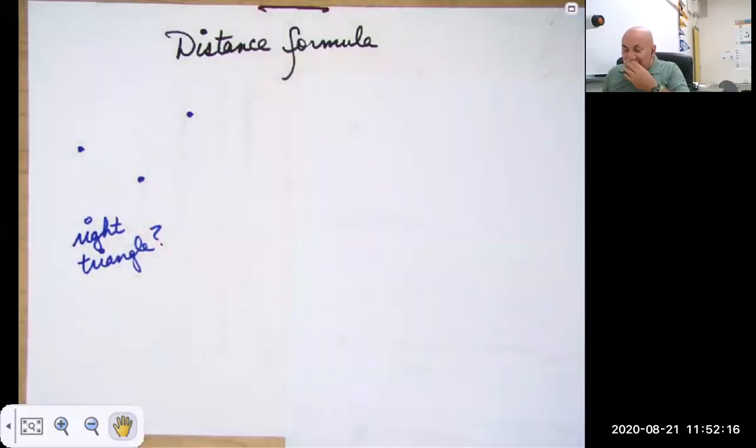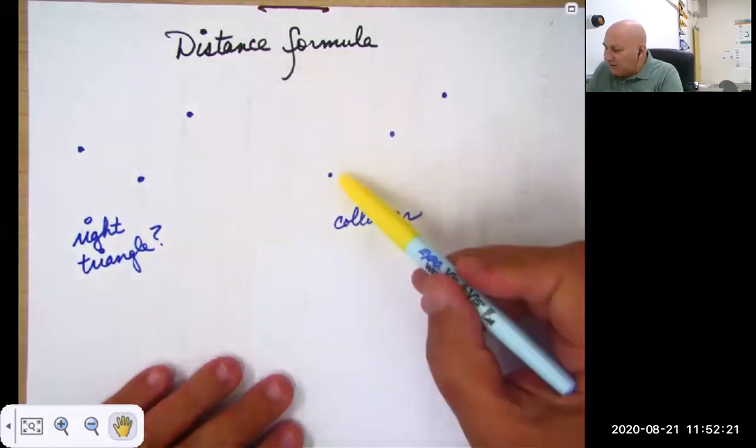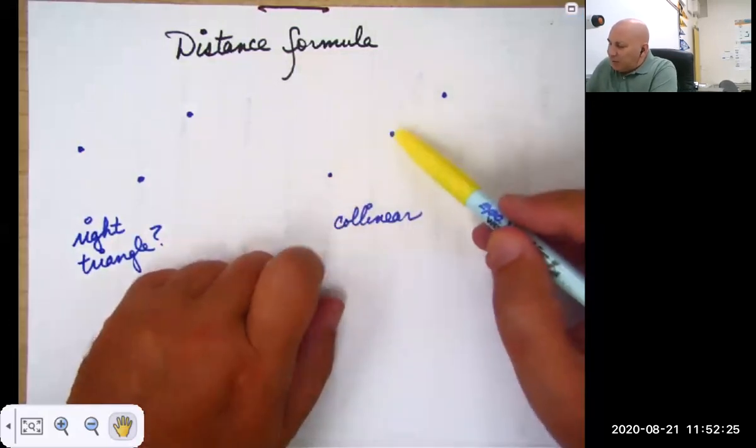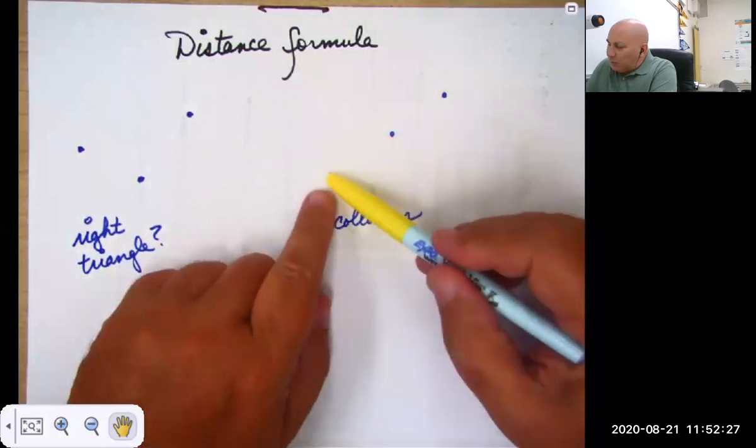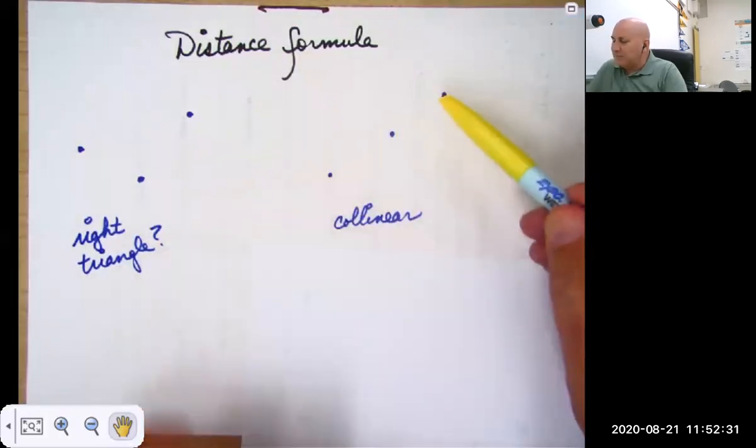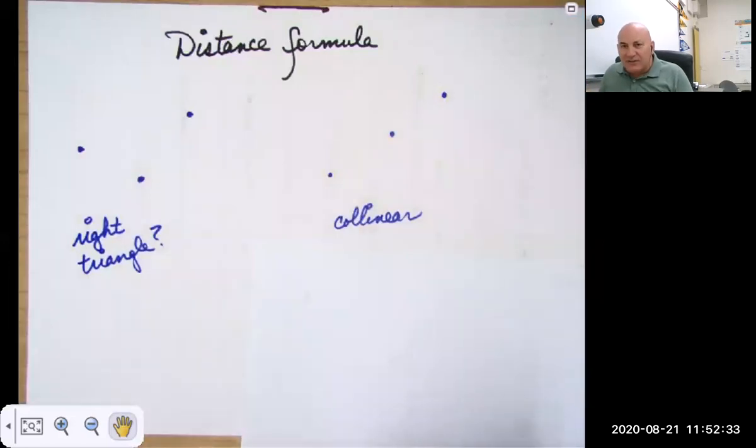How can you tell using the distance formula if points are collinear, as I already said? You graph them and you say, is this distance plus this distance equal to this distance? The whole thing. And if it doesn't, then again, they form a triangle and they are not collinear.